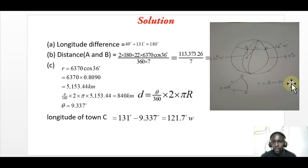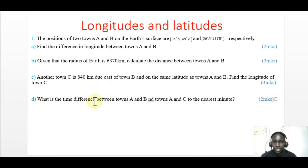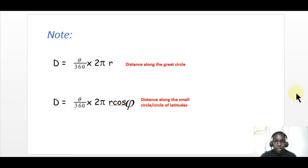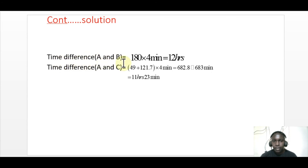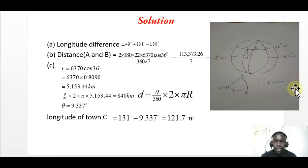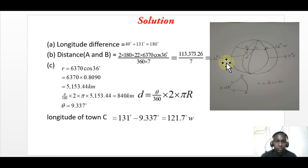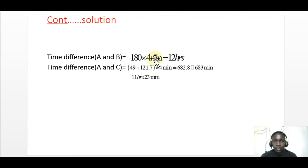For the last question, we find the time difference between towns A and B, and A and C. For A and B: A is on longitude 49 degrees east, and B is on 131 degrees west. The longitude difference is 131 plus 49 equals 180 degrees. Converting to minutes — one degree equals four minutes — gives 720 minutes, which converts to 12 hours. So the time difference between A and B is 12 hours.